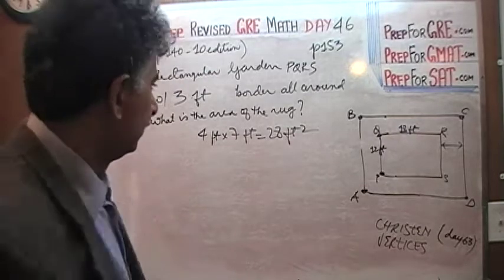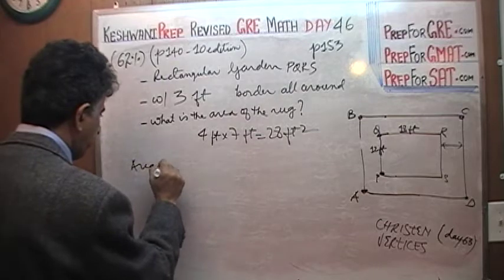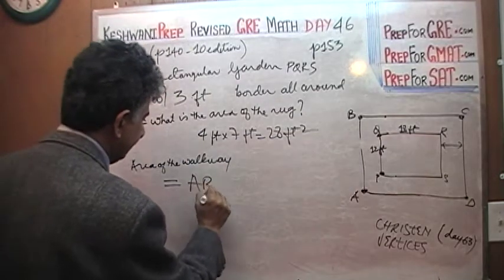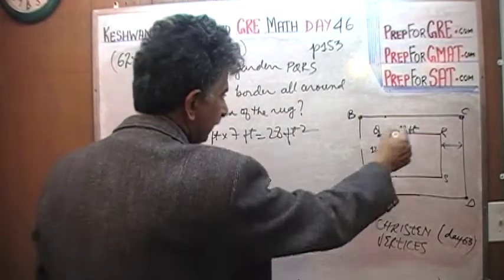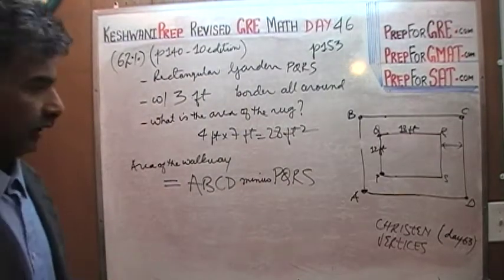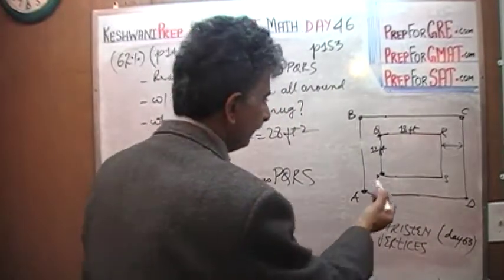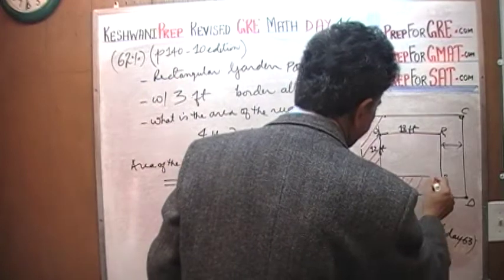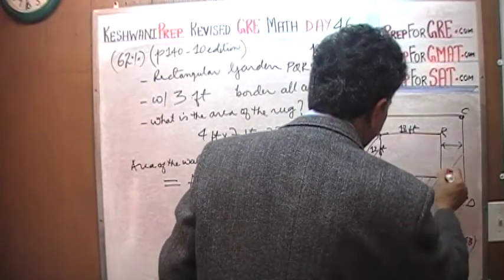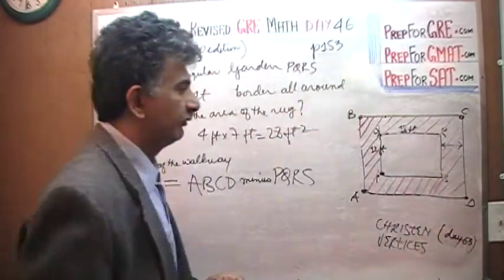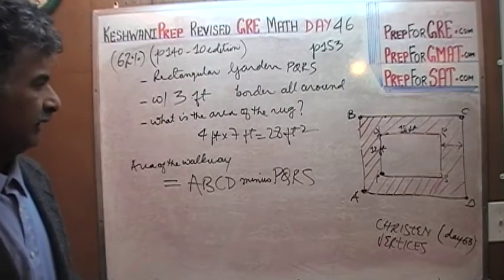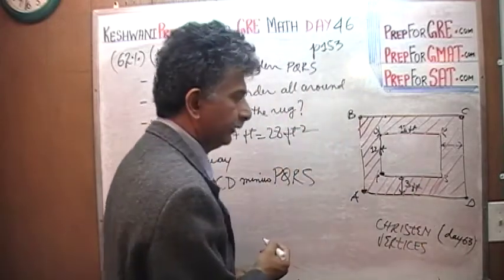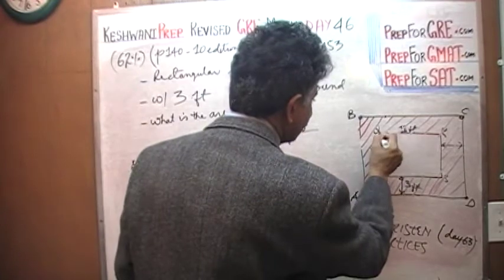This is very straightforward. The area of the walkway equals the area of the outside rectangle ABCD minus the area of the garden PQRS. If you take the area of ABCD and subtract the inside part PQRS, what you're left with is the area of the walkway. Now, what are the dimensions of A to B? Since the walkway is 3 feet wide on each side and P to Q is 12 feet, this dimension is 3 feet on one side.